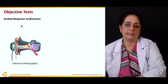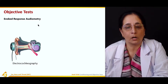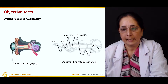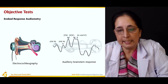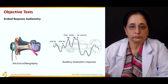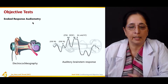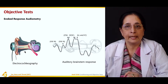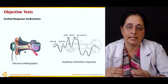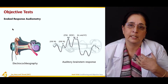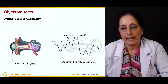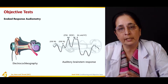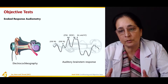For objective tests, we have evoked response audiometry, also known as electrocochleography, and then ABR — auditory brainstem response. In evoked response audiometry, sound is introduced into the ear and a recording of the cochlea is obtained on a graph, telling us whether hearing is normal or not. Auditory brainstem response also tells us whether the acoustic reflex is normal or not.